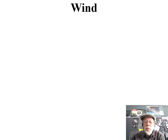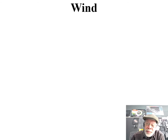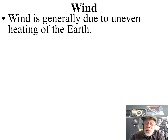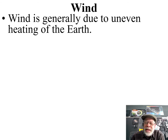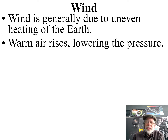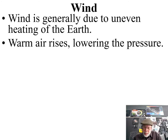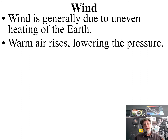Hello everybody. We're going to be talking about wind — this is chapter six, number three. Wind is generally due to uneven heating of the earth. Warm air molecules are vibrating faster, that pushes them apart, lowering the density, so warm air rises.